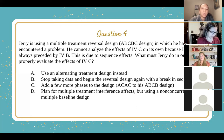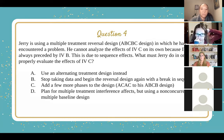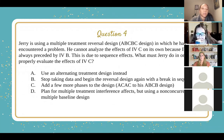A, use an alternating treatment design instead. B, stop taking data and begin the reversal again with a break in sequence. C, add a few more phases to the design — specifically an A, C, A, C, A, B, C, B sequence. Or D, plan for multiple treatment interference effects but also use a non-concurrent multiple baseline design.